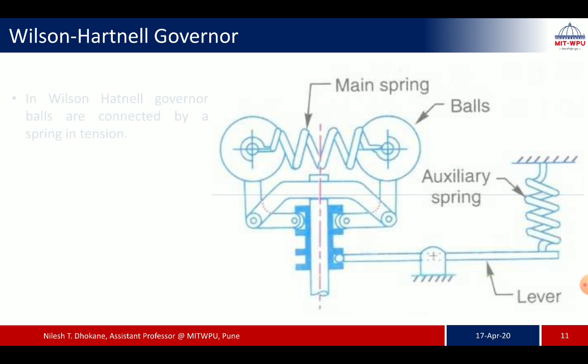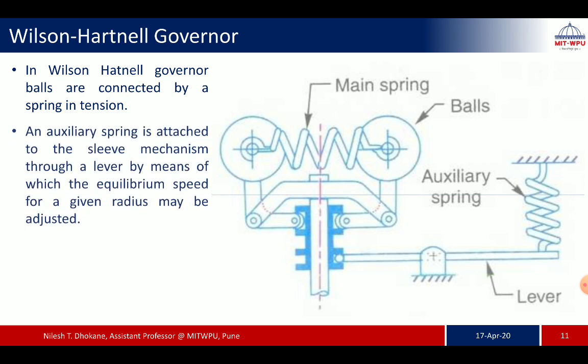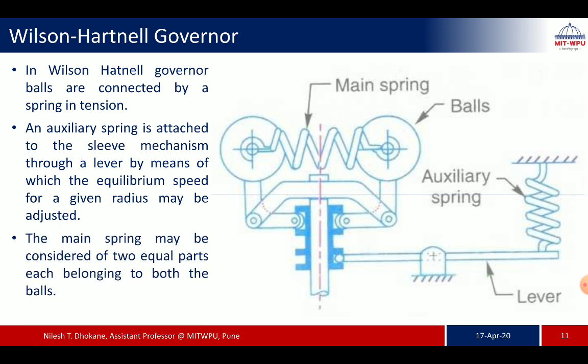The next type is the Wilson-Hartnell governor. In this, the balls are connected by a spring in tension. An auxiliary spring is attached to the sleeve mechanism through a lever, by means of which the equilibrium speed for a given radius may be adjusted. The main spring may be considered as two equal parts, each belonging to both balls.